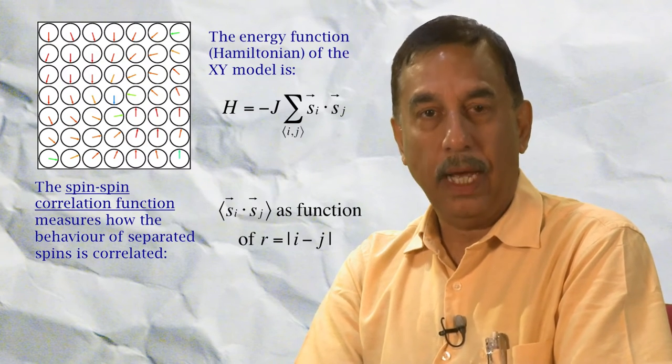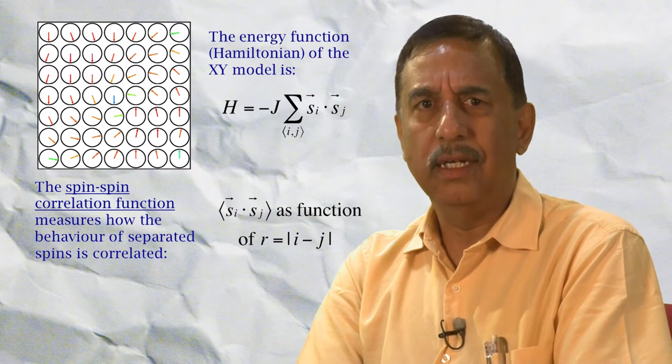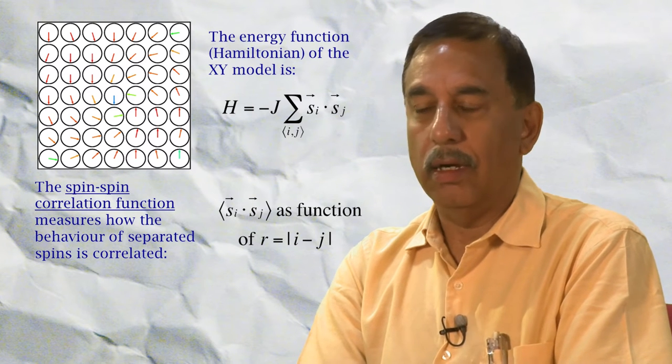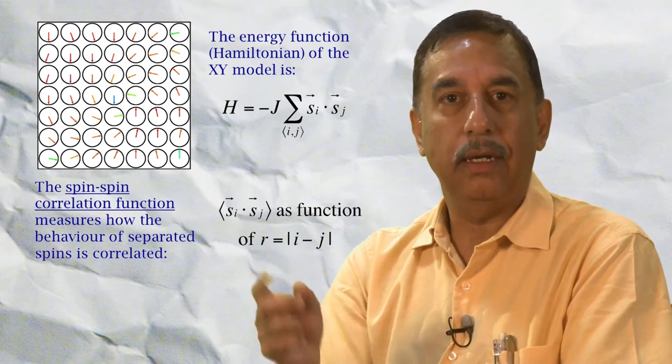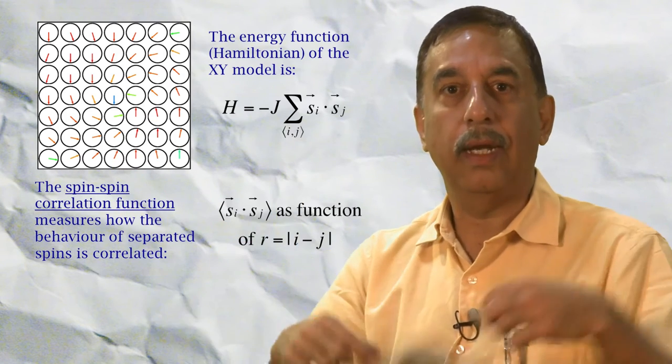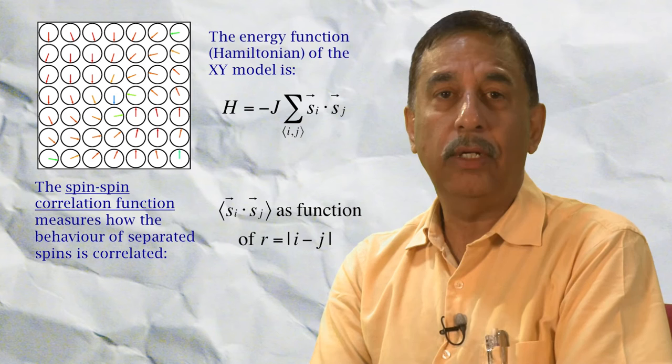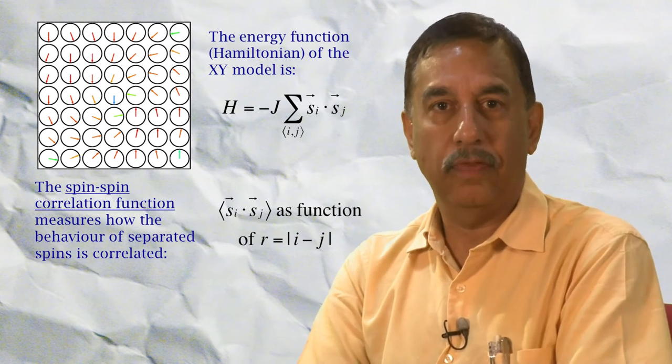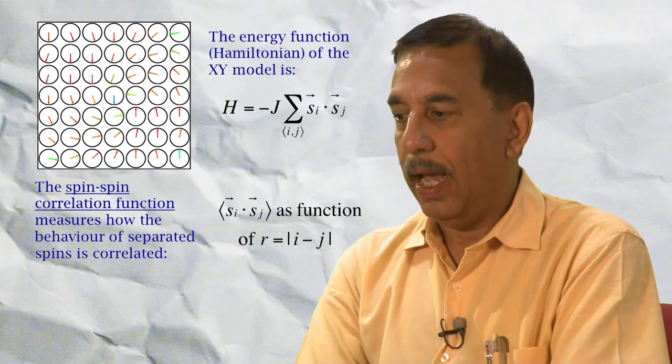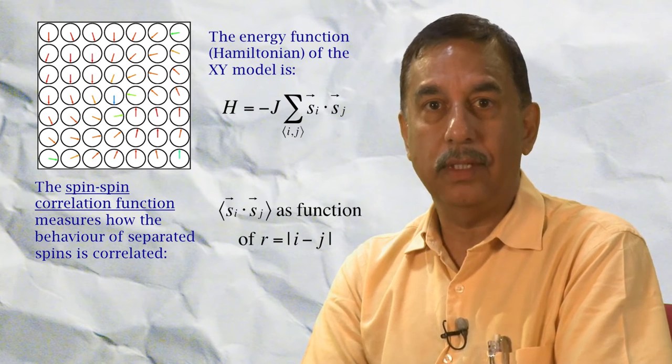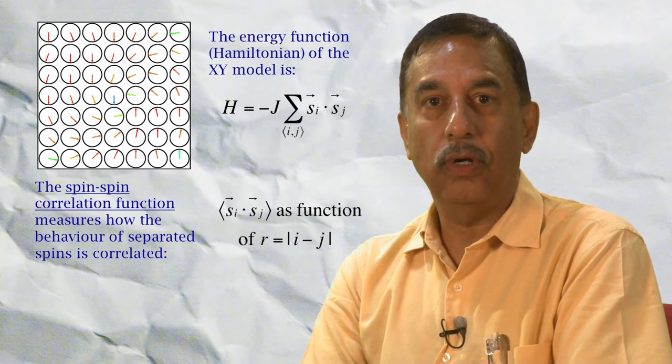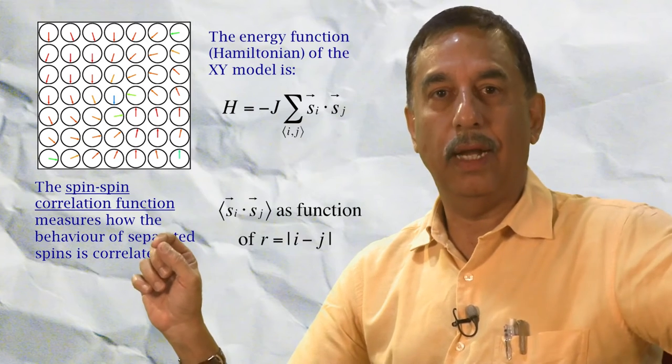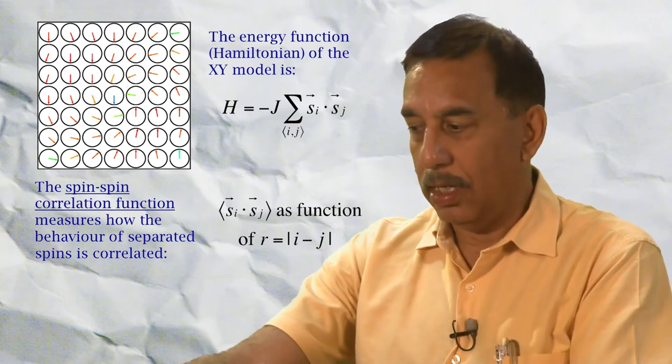Let us focus on the XY model because it is considered the classic model to explain the Kosterlitz-Thouless transition. Here you have spins randomly oriented in any direction, they are placed on a square lattice in two dimensions. The Hamiltonian would like to minimize the energy by lining up all the spins. This is called a ferromagnetic system. One diagnostic of how the system is behaving is the two-point correlation function of two spins at far away points on the same lattice as a function of the separation along this lattice.